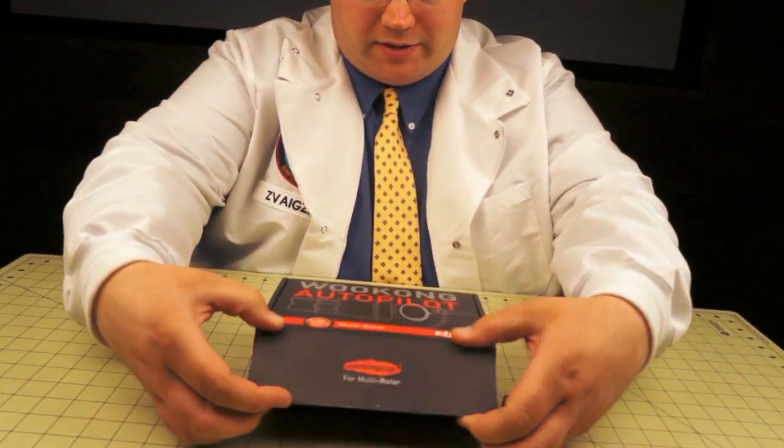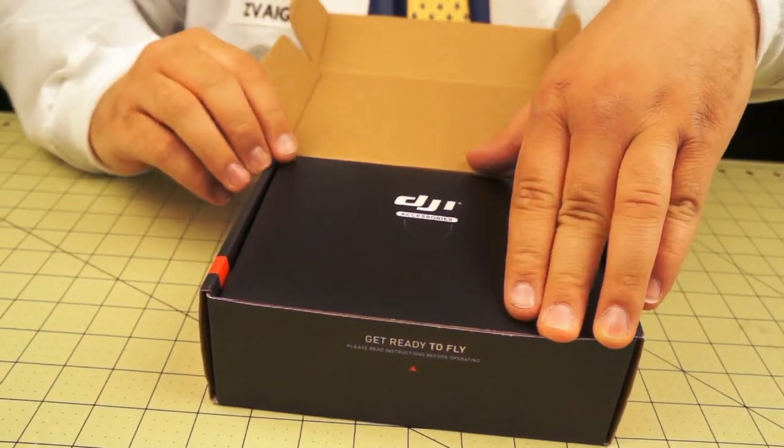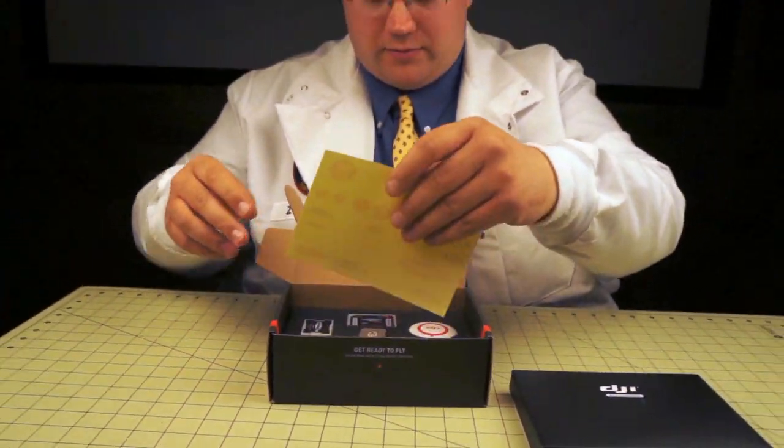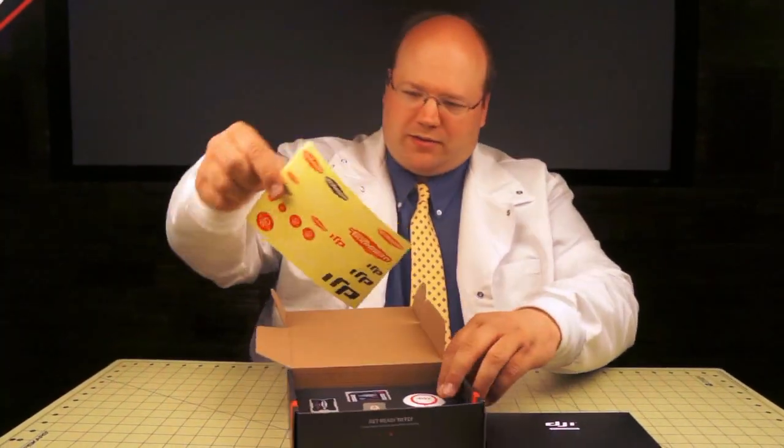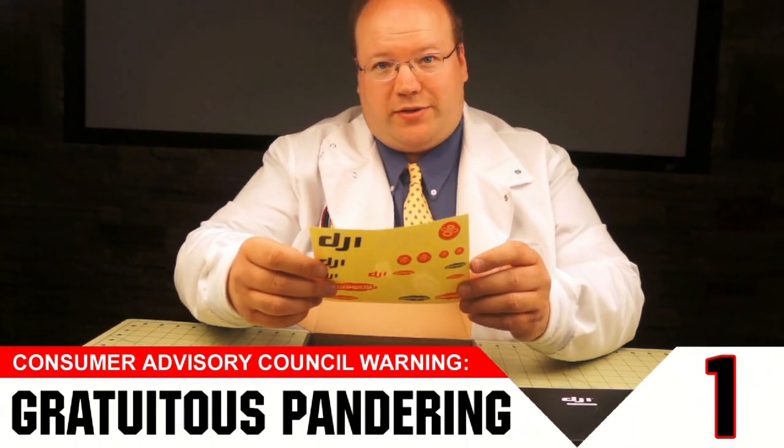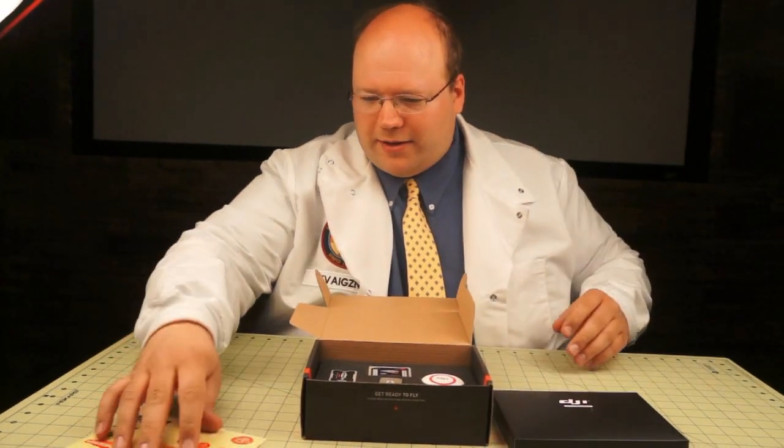Okay, here we have the Wukong Autopilot. Let's take a look and see what's on the inside here. Accessories, get the accessories over there. Oh, stickers. I thought maybe it was a note from Robert at UAVProducts.com, formerly DJI USA. Anyway, stickers.